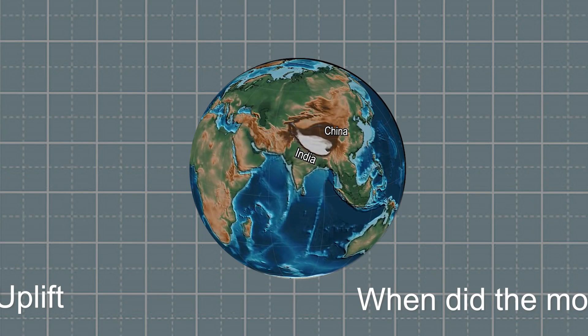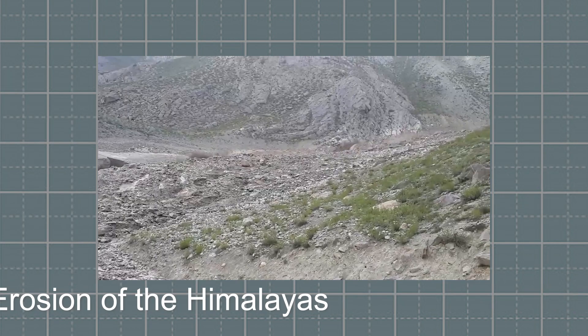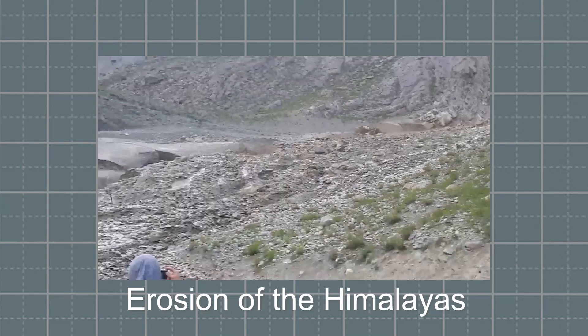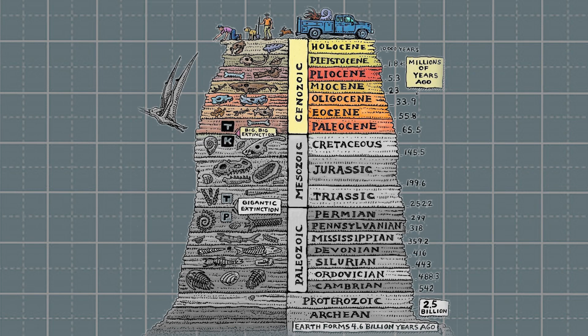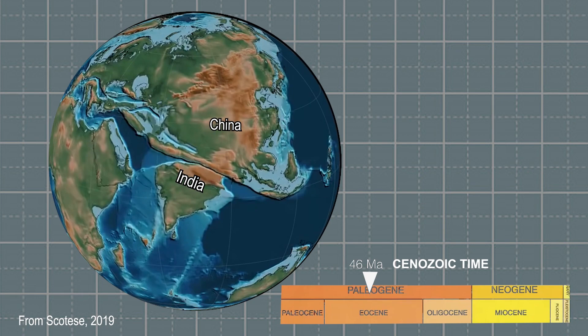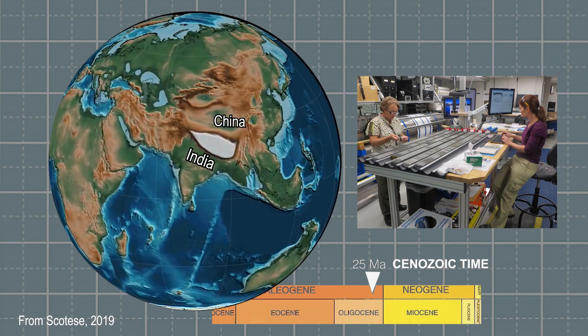I'll tell you what we know about when the modern Asian monsoon started and how this is related to the rise of the Himalayas and the Tibetan Plateau, as well as how the monsoon-mountain interaction is linked to erosion in the region. The modern Asian monsoon began sometime in the Cenozoic era, the last 66 million years of Earth history. Determining when in the Cenozoic the Asian monsoon began and then intensified requires examining the geological record more closely.